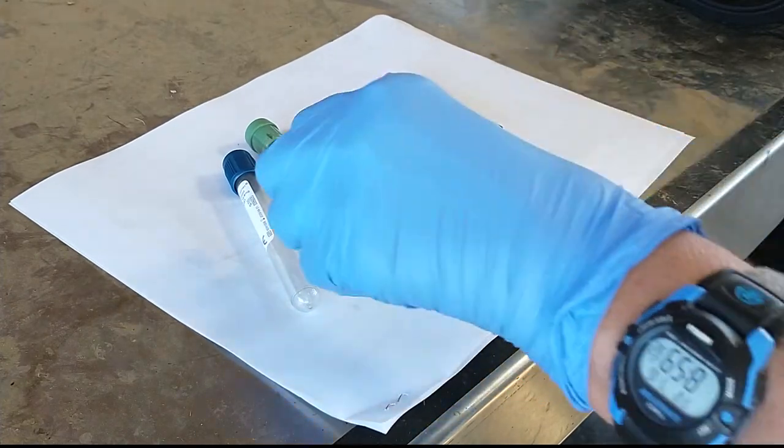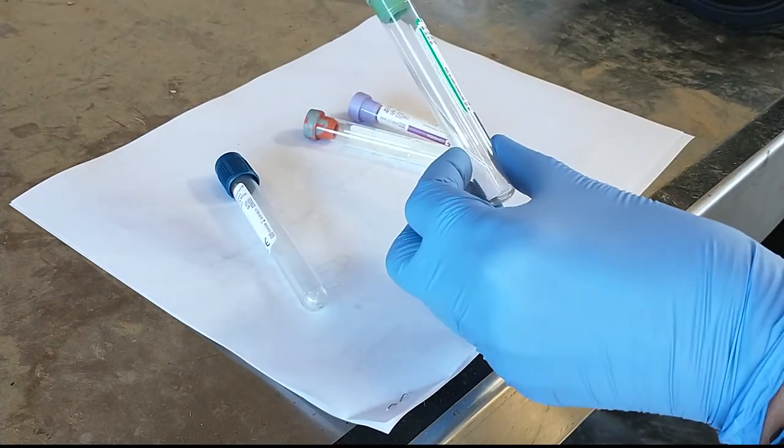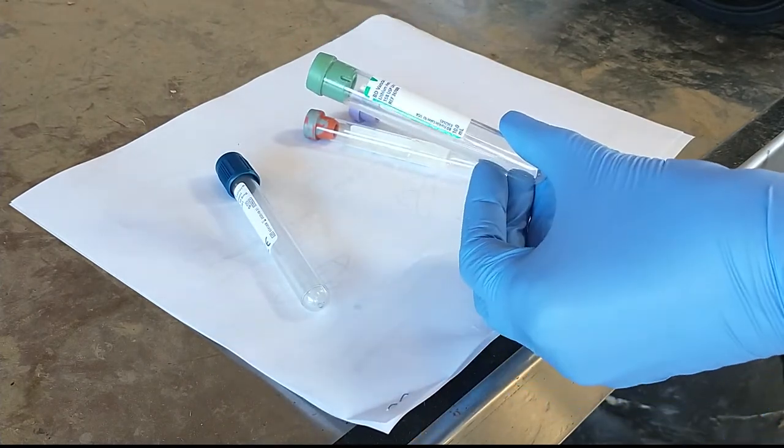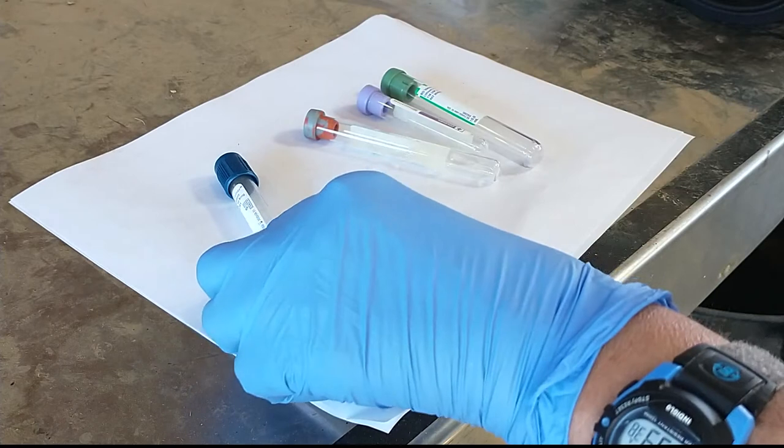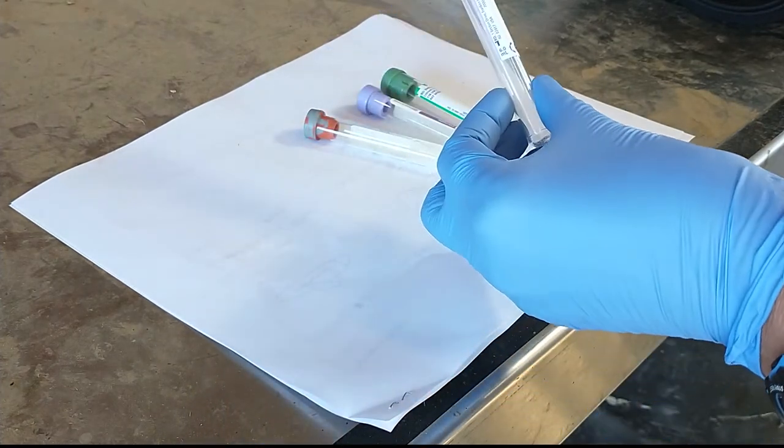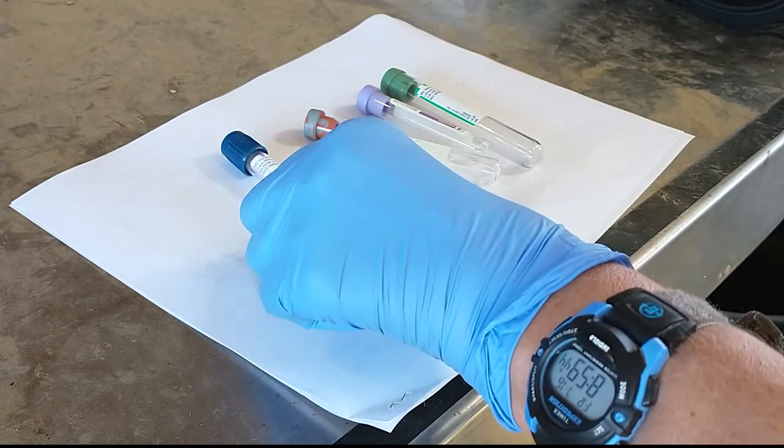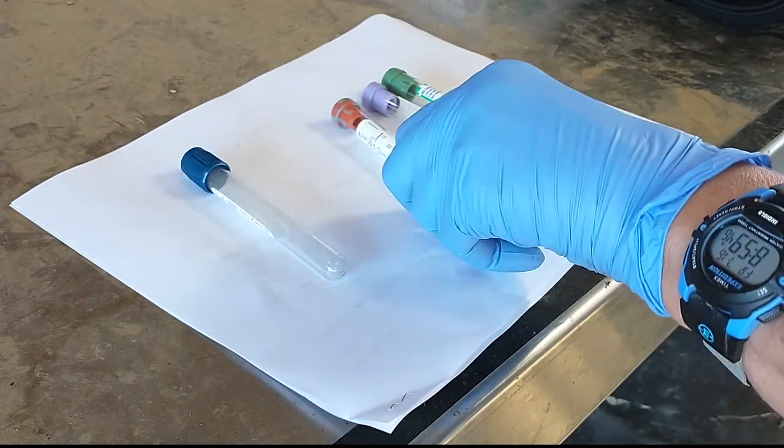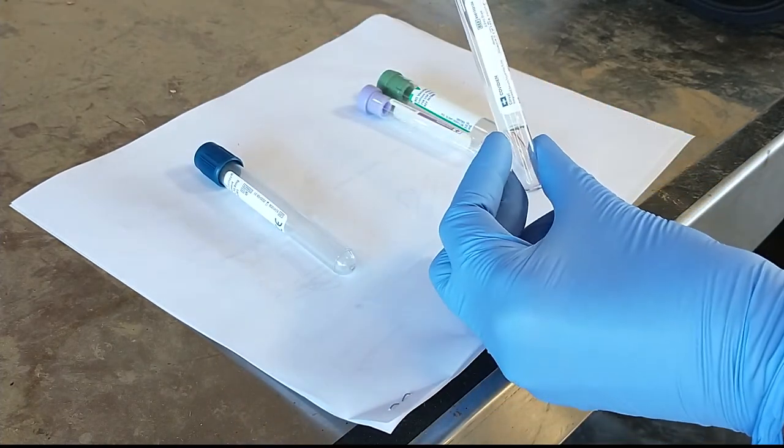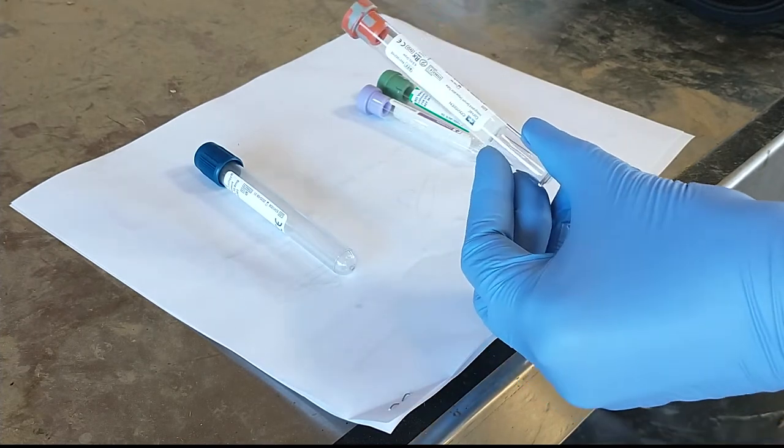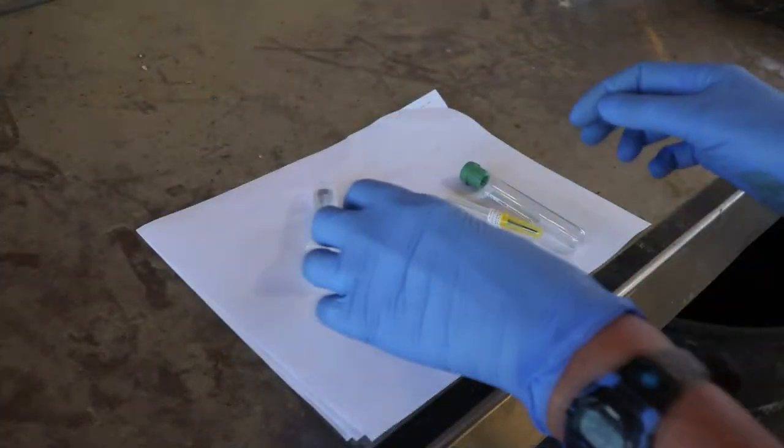The color of the stopper tells you what type of additive is in the tube. For example, green top tubes have the anticoagulant heparin added, purple top tubes have EDTA added, royal blue top tubes have zinc free caps which is important when submitting blood for trace mineral panel, while red top tubes or tiger top tubes like this one have no additives and are used when serum is needed.